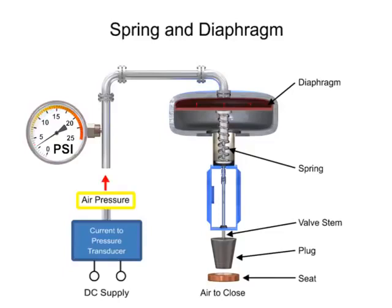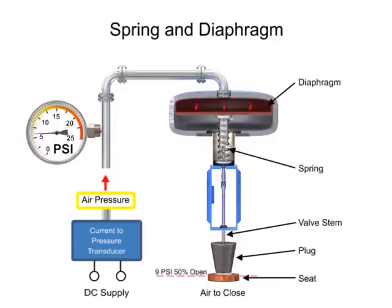For example, a pressure of 9 PSI applied to the diaphragm moves the spring and valve stem to 50% of operating range.